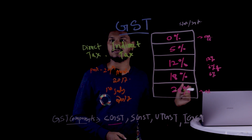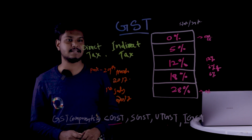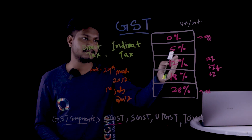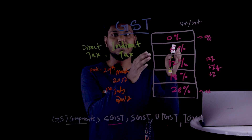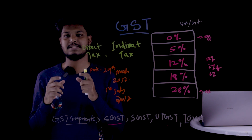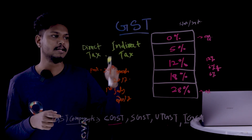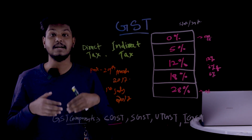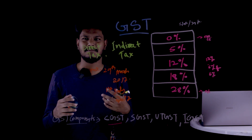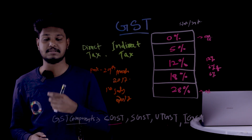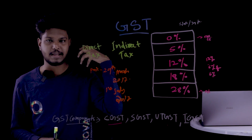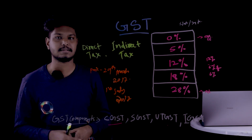The GST Council decides which product falls under which slab rate. Each product is arranged and included in a slab by the GST Council. The GST Council makes all decisions on tax rates for different product categories.